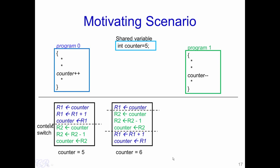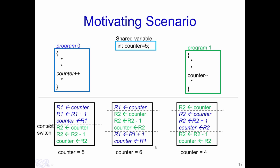The third case is when we get counter equal to 4 — the opposite of the previous case. Program 1 executes first: counter (value 5) is loaded into R2, so R2 = 5. There is a context switch and program 0 executes, loading counter into R1, incrementing it to 6, and writing 6 back into counter. There is another context switch and program 1 continues from where it stopped — R2 still holds 5. R2 is decremented to 4 and stored into counter. Thus, at the end of this execution, counter equals 4.